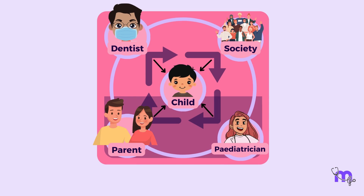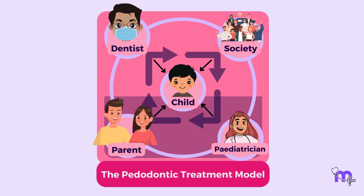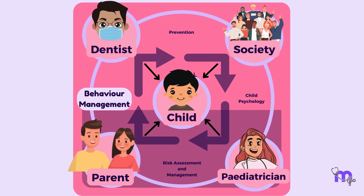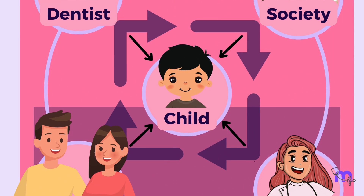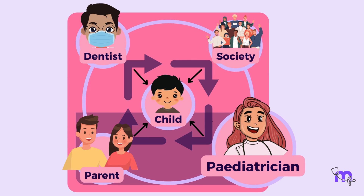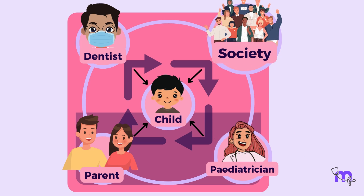New models based on the periodontics treatment triangle have been proposed, such as the periodontic treatment model, which also includes a pediatrician. The most distinct features of pediatric dentistry are included, such as prevention, risk assessment and management, child psychology, and behavior management. This model uses a square that has the child in the center. A pediatrician is added to the treatment model as they are the first source of information to the parents. Family and society are other factors playing an important role as depicted in the model.